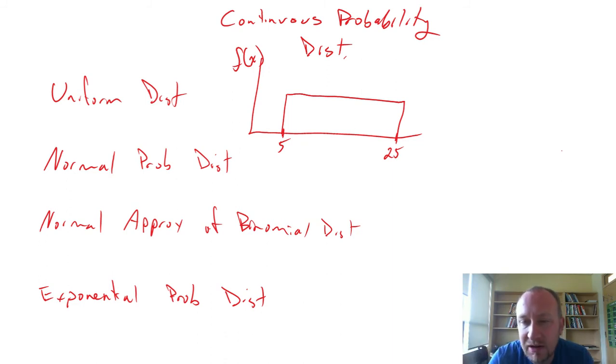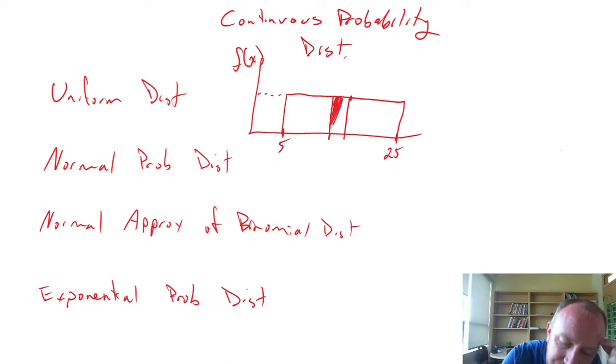When we're calculating probabilities now, instead of just looking at the height of that curve, that's no longer going to give us a probability. What we're going to be considering now is the area under the curve. And so that will be the probability that we're going to be interested in.